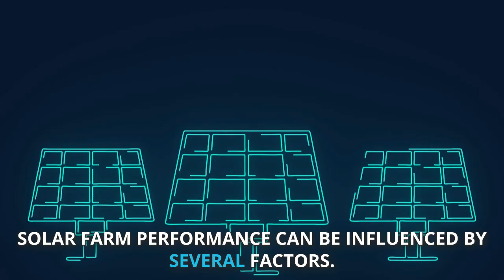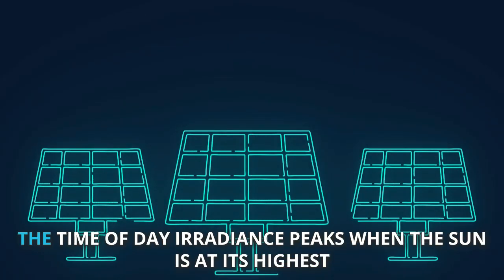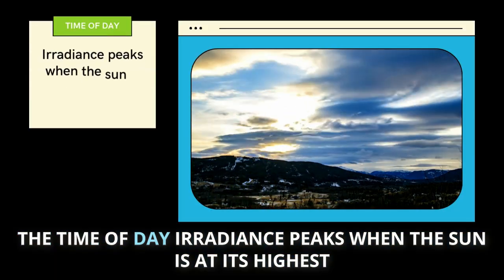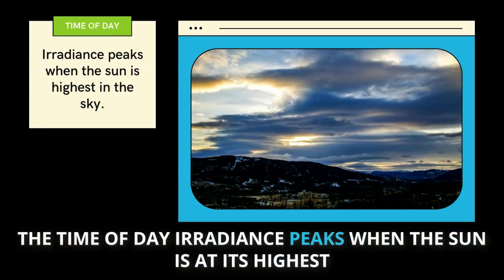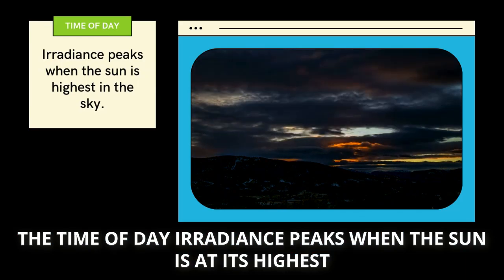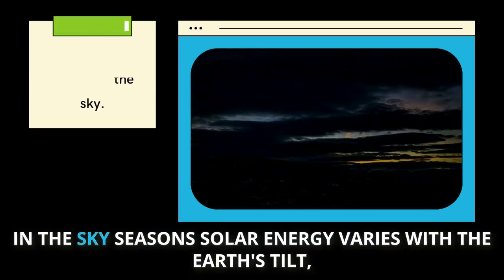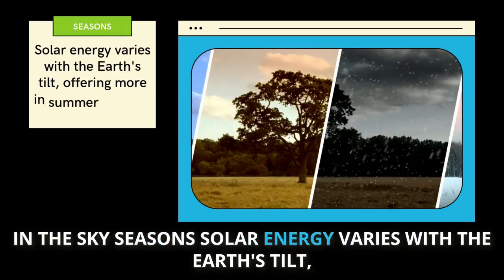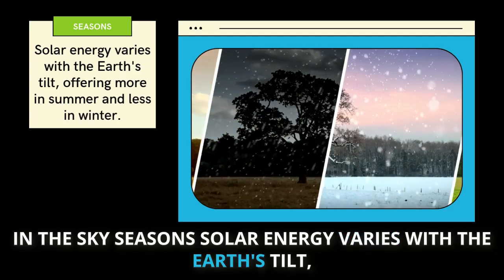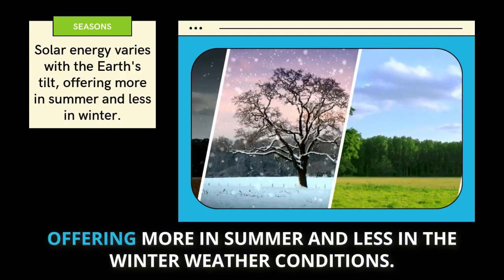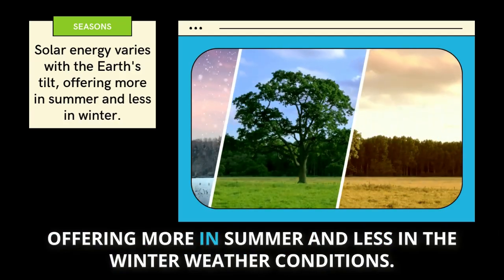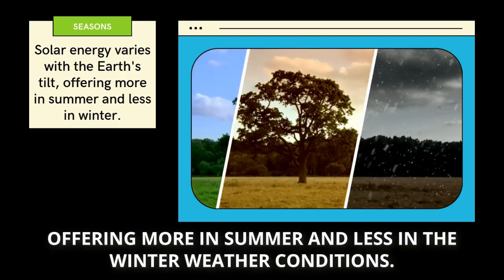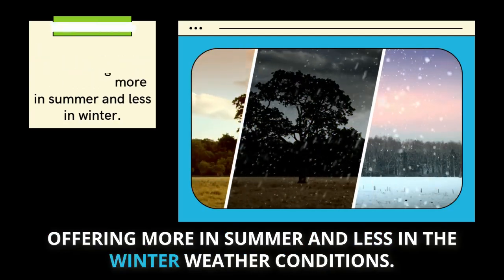Solar farm performance can be influenced by several factors. The time of day — irradiance peaks when the sun is at its highest in the sky. Seasons — solar energy varies with the Earth's tilt, offering more in summer and less in the winter.